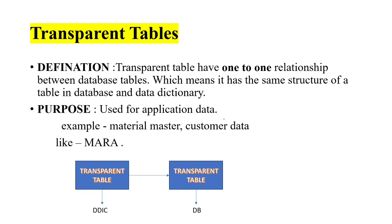Let us see transparent tables first. A transparent table has a one-to-one relationship between database tables, which means it has the same structure as a database table — the same in both the database and in the Data Dictionary. For example, a transparent table stores material master data or customer data. Whenever a user creates a transparent table in the Data Dictionary, the same table gets created automatically in the database.